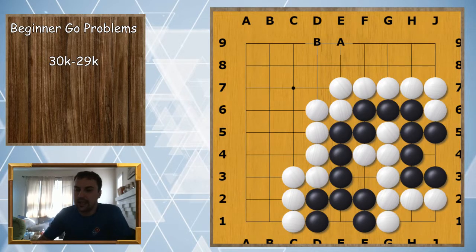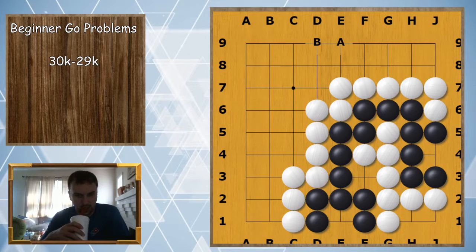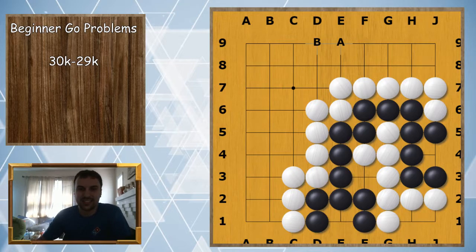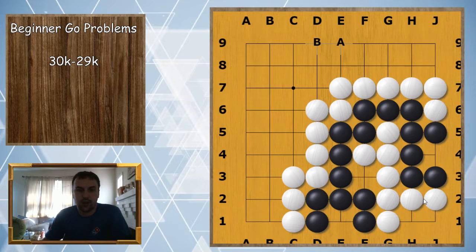Nope, black is not alive. All right, is black alive or dead? In this example black is alive because this eye is an eye and it connects all through here to this eye which is the second eye. So this group, although it looks really weird, is completely alive.